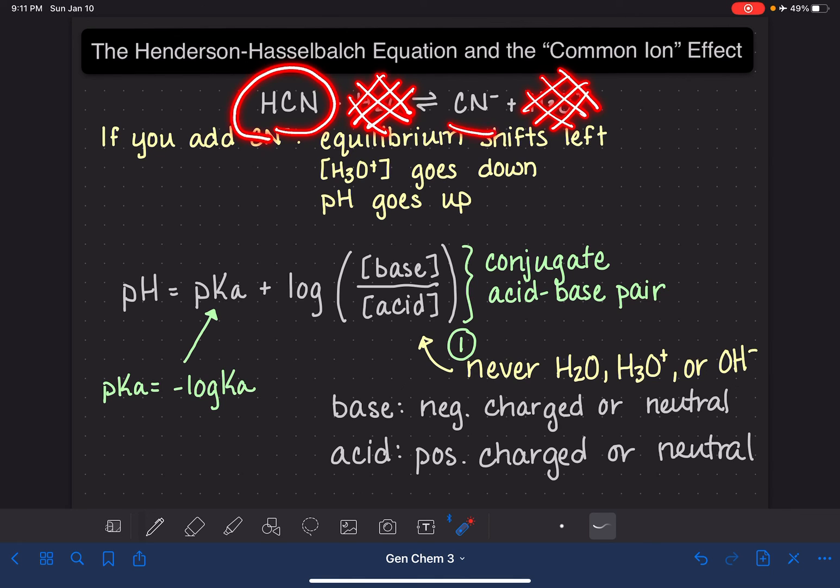What we have left is HCN and CN-. We have something that's negatively charged, so we know for sure that that is our base. And then that means the other substance has to be the acid.